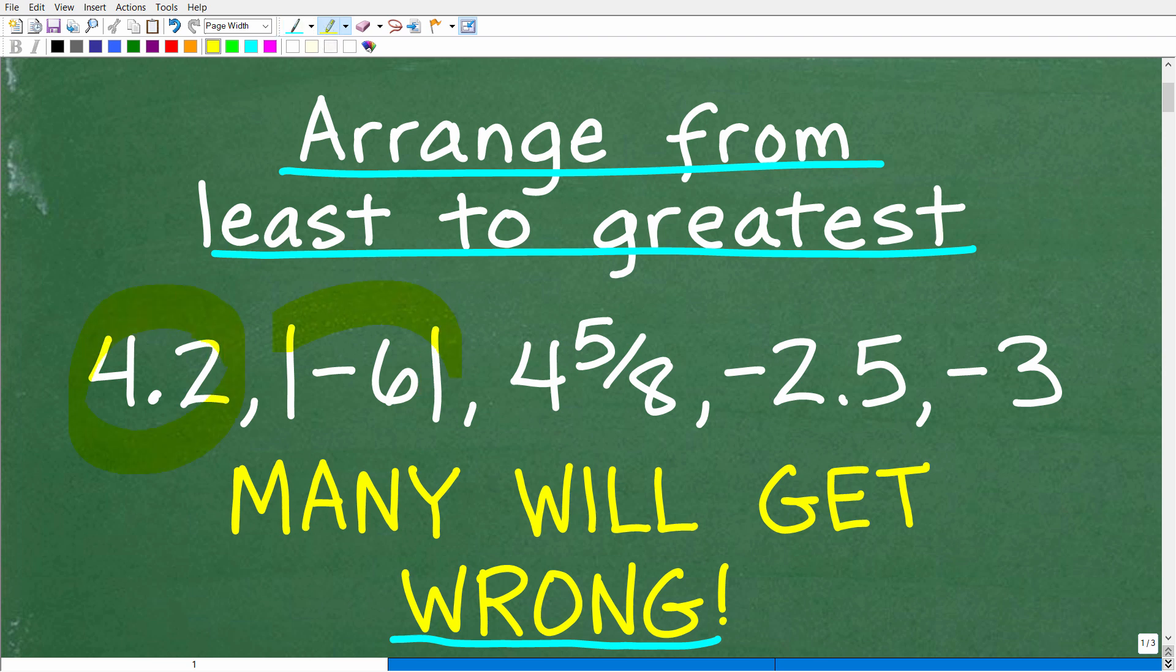Let's take a look at the numbers. We have 4.2, absolute value of negative 6, 4 and 5 eighths, negative 2.5, and negative 3. Again, we want to arrange these numbers from least to greatest without using a calculator.